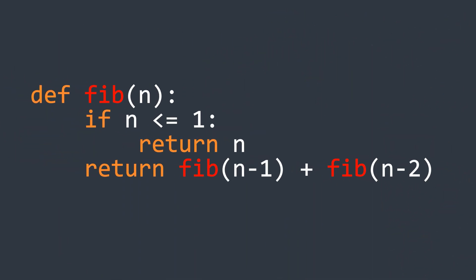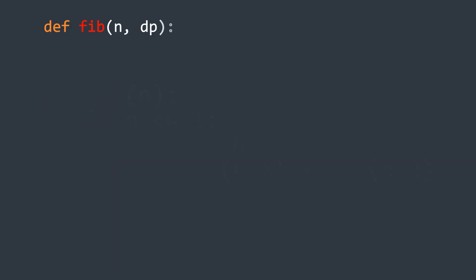Now let's see the code for this approach. First we define a function that takes two parameters, n and an array that stores pre-computed values, initialized with minus 1. Inside the function, we first check if the value at the index n is not minus 1. If it is not minus 1, that means that the value has already been calculated. So we simply return it.